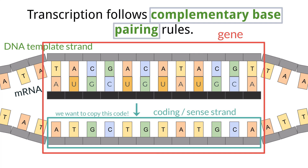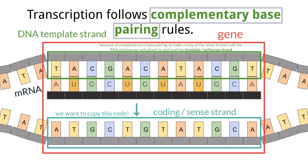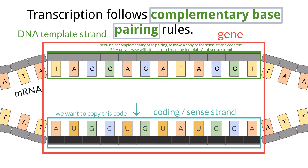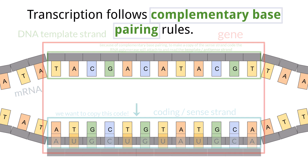But because pairing only works with complementary bases, the RNA polymerase is going to read the opposite strand of what we want to code to get the strand that we need. This is called the template strand, or the anti-sense strand. You can see as a final result of the process, the messenger RNA sequence is identical to the coding strand that we wanted, of course with the exception of uracil bases replacing thymine bases.